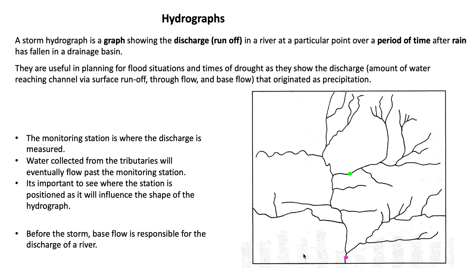The monitoring station is where the discharge is measured. Water collected from the tributaries will flow past the monitoring station, and it's very important to see where this monitoring station is positioned as it will influence the shape of the hydrograph. Before the storm, base flow is responsible for the discharge of a river.